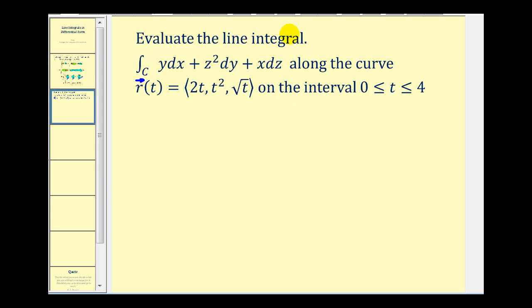Let's look at our example. We want to evaluate this line integral in differential form along the curve given by r of t on the closed interval from zero to four. So we know that x of t equals 2t, y of t equals t squared, and z of t equals t to the one-half.